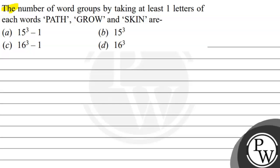Hello, let's see the question. The question says: the number of word groups by taking at least one letter of each word PATH, GROW, and SKIN are: